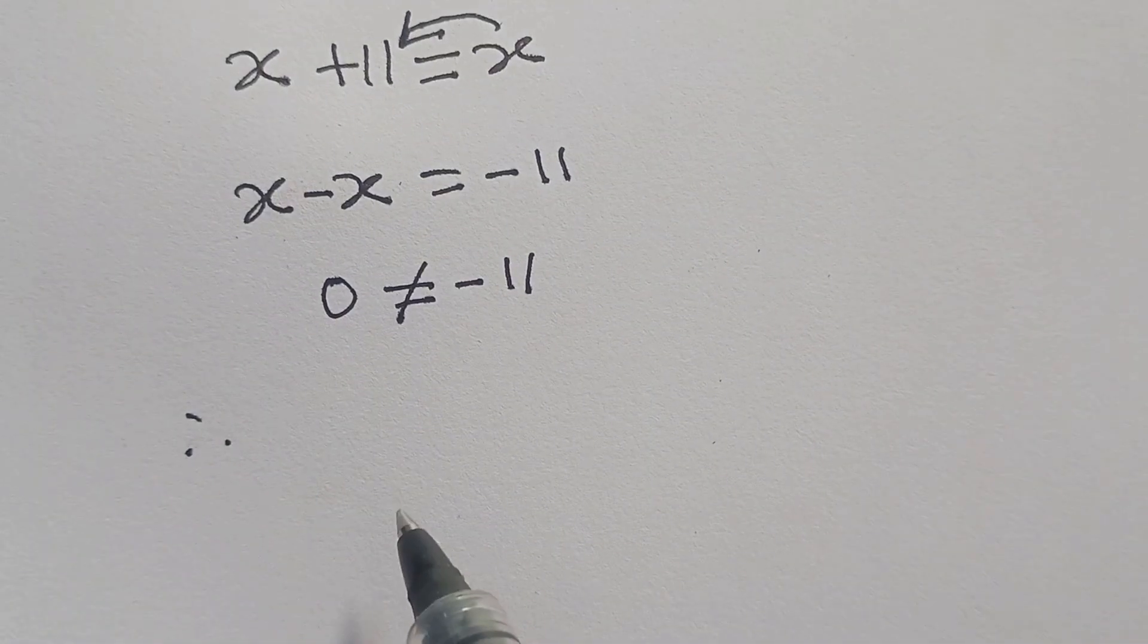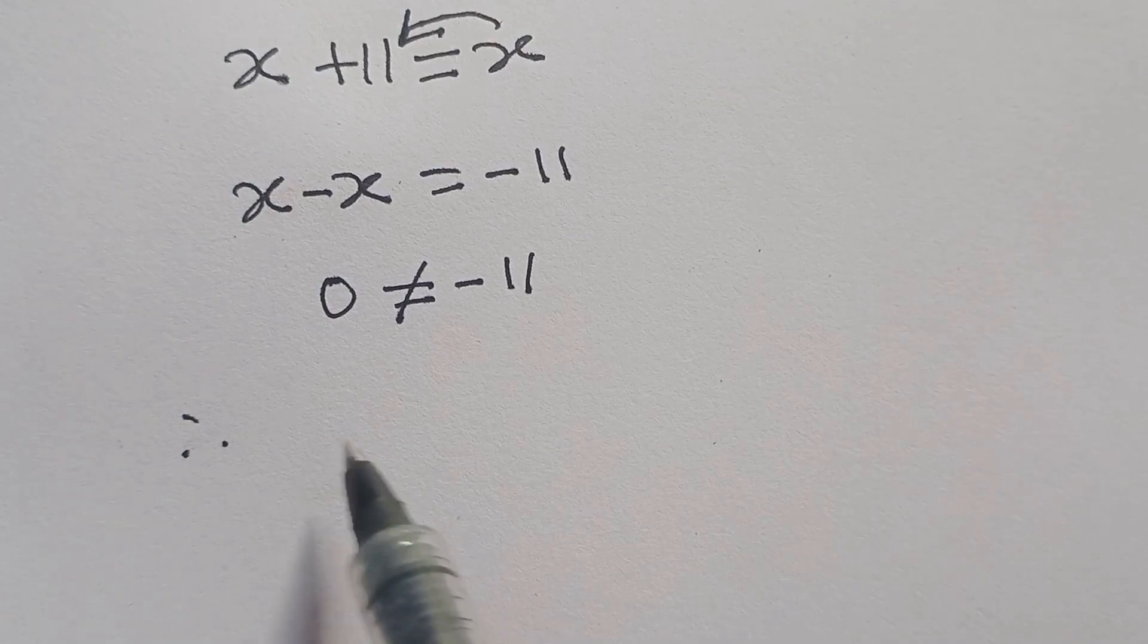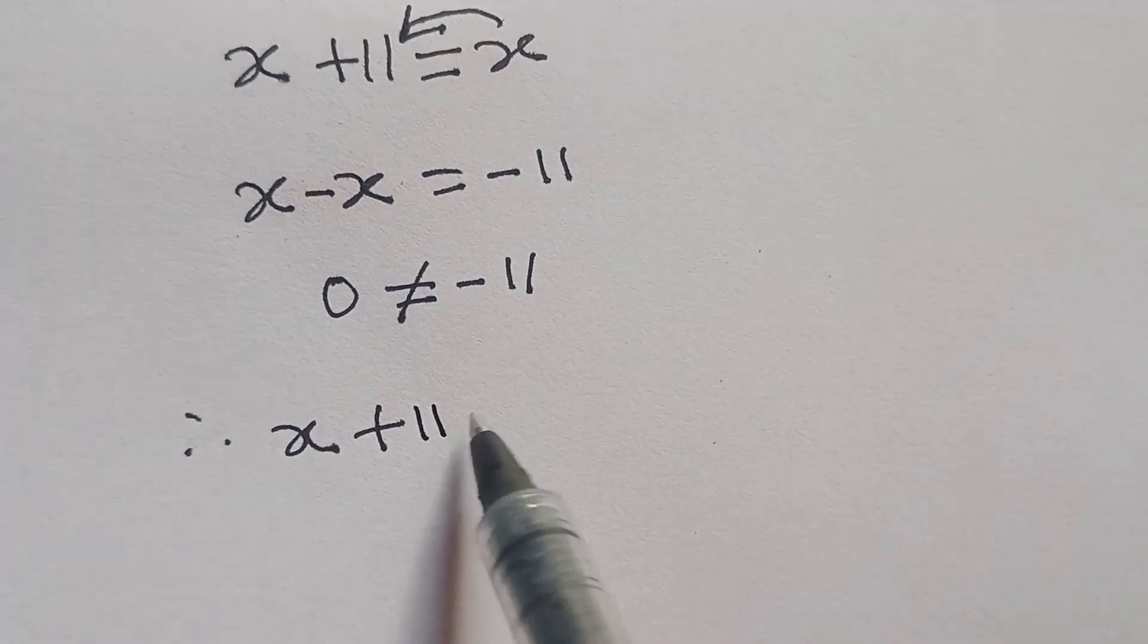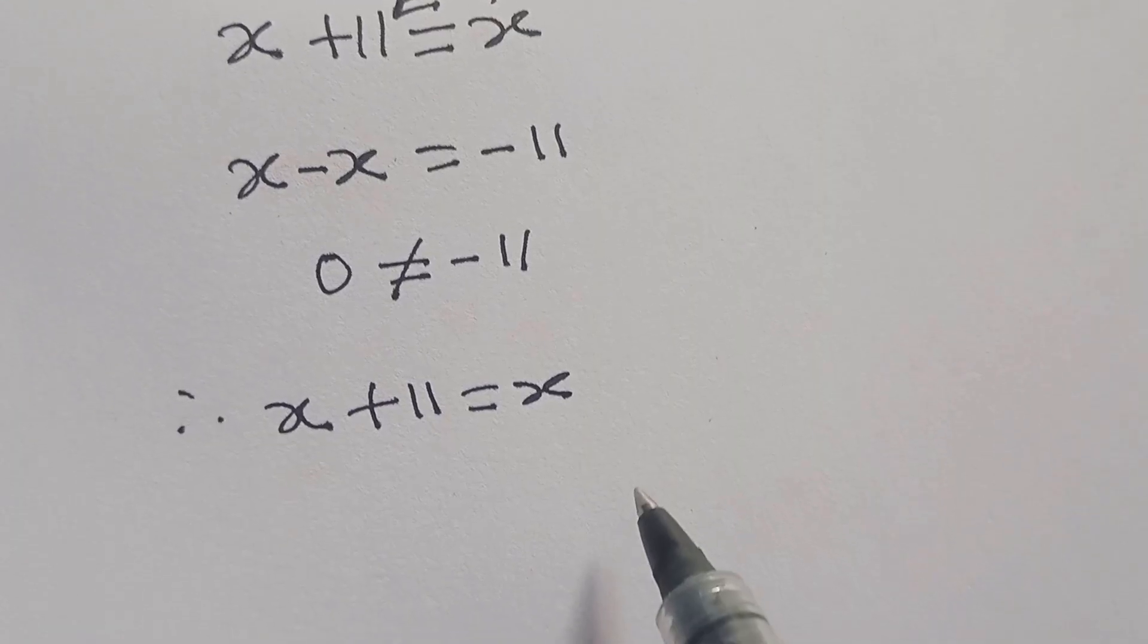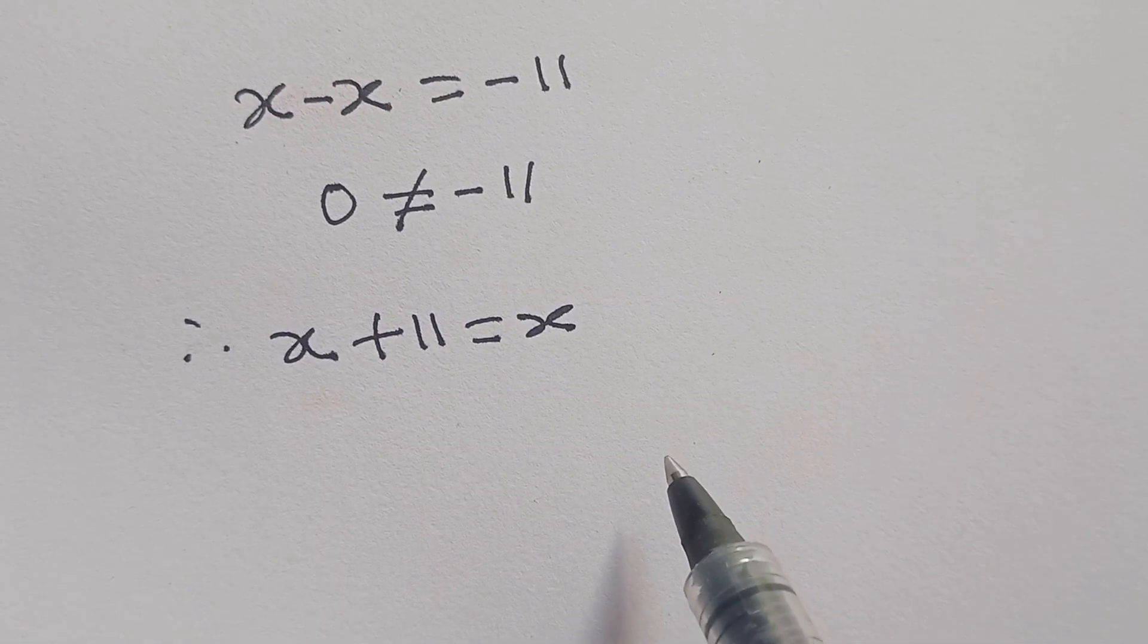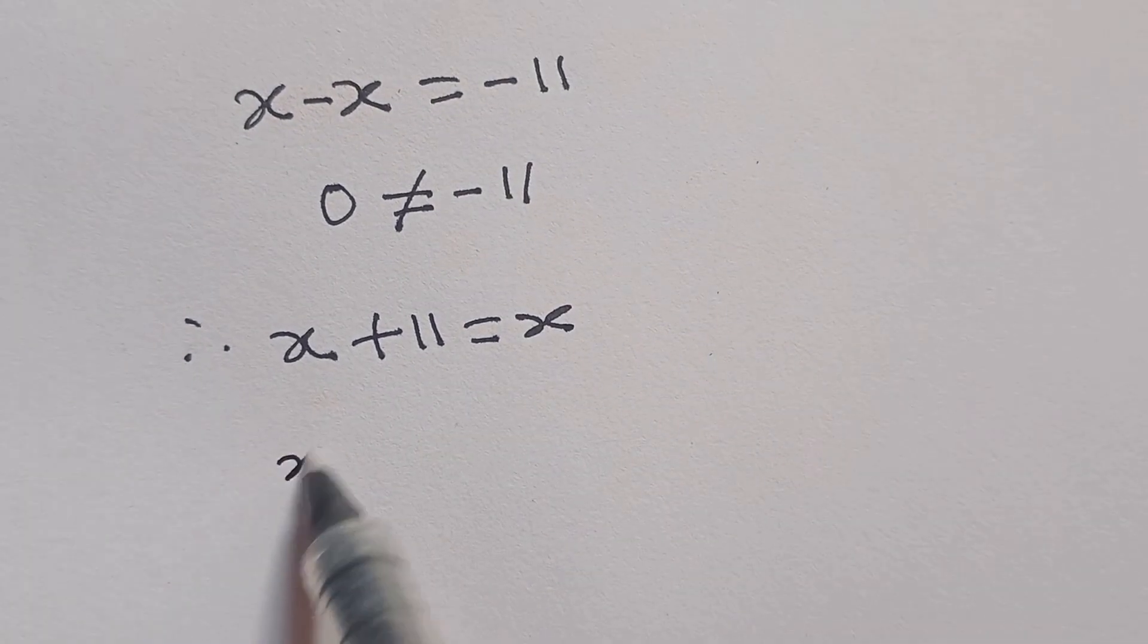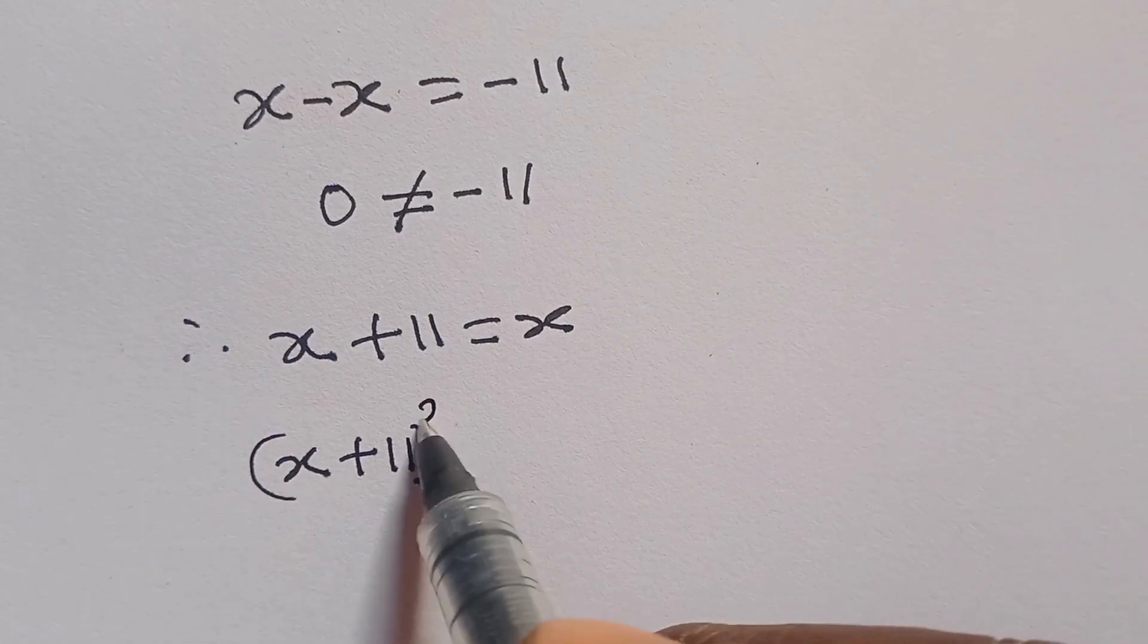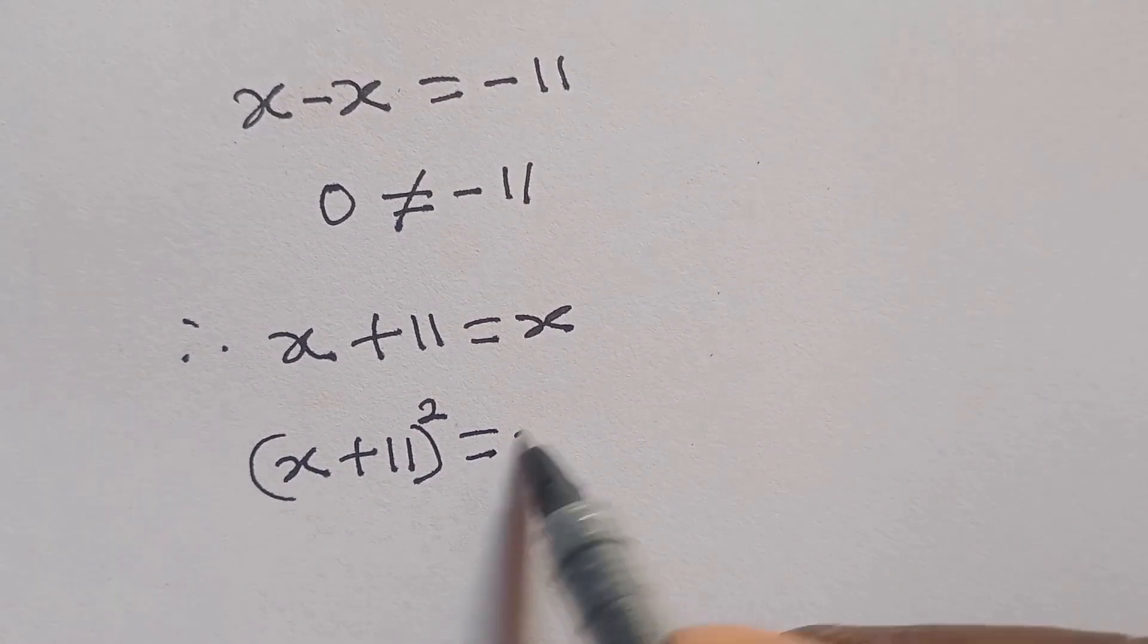Now, therefore, our question that is x plus 11 to be equal to x. So, to get rid of this equation and get the value of x, let's try and square both sides.